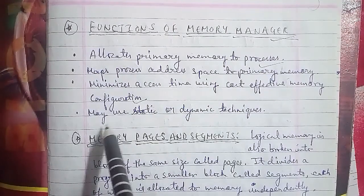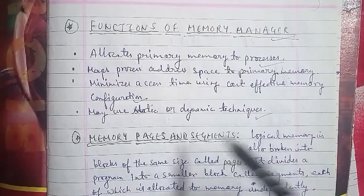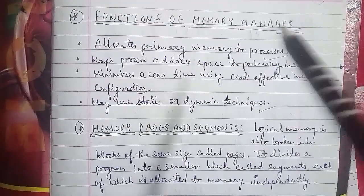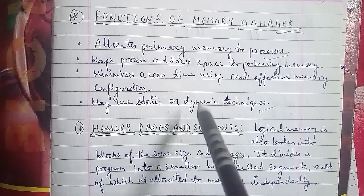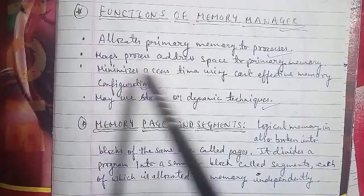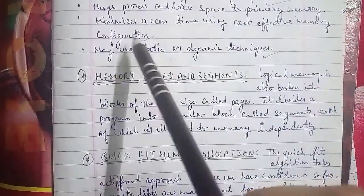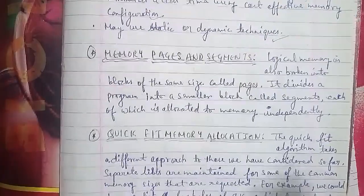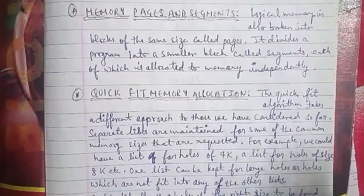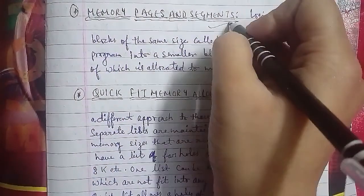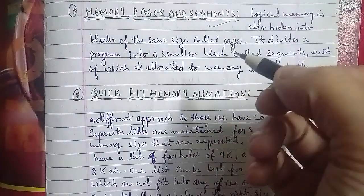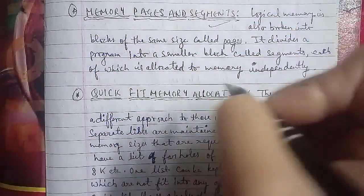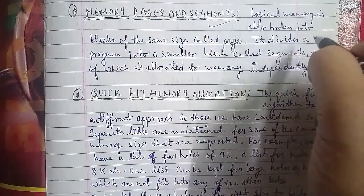Now discussing memory page and memory segment. Logical memory is broken into blocks of the same size, called pages. For segments, the program is divided into smaller blocks called segments, each of which is located in memory independently.